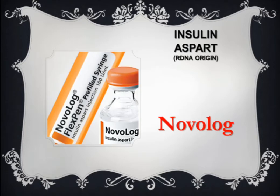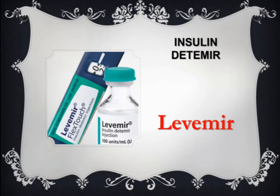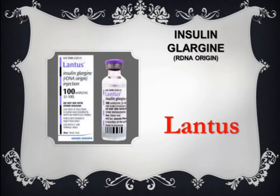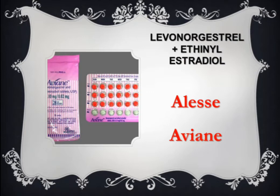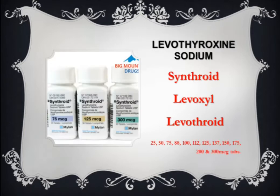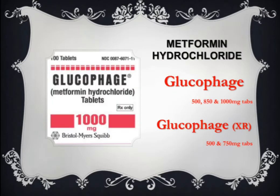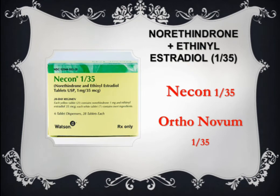Insulin aspart has trade name of NovoLog. Insulin detemir, trade name: Levemir. Insulin glargine, trade name: Lantus. Insulin lispro has trade name of Humalog. Levonorgestrel with ethinyl estradiol, trade names: Alesse and Aviane. Levothyroxine sodium, trade names: Synthroid, Levoxyl, and Levothroid. Metformin hydrochloride, trade names: Glucophage and Glucophage-XR. Norethindrone with ethinyl estradiol, trade names: Necon and Ortho-Novum.